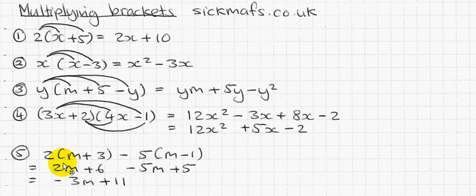So two times m is 2m. Two times three is six. I actually treat this as a minus five even though it's taking away. You'll see that more and more in algebra. So minus five times m is minus 5m. And minus five times minus one is actually plus five. Minus times a minus is a plus.